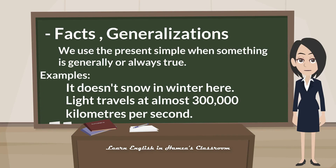We use the present simple when something is generally or always true. It doesn't snow in winter here. Light travels at almost 300,000 kilometers per second.